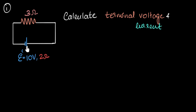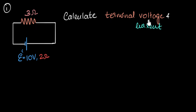Let's solve some problems with cells connected to a simple circuit. The first one: we have a cell with EMF 10 volts, an internal resistance of two ohms, and it's connected to a resistor of three ohms. Our goal is to calculate the terminal voltage and what the current in the circuit is going to be. Since this is the positive terminal, the current will flow in this direction.